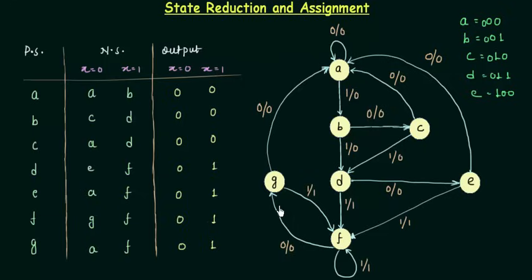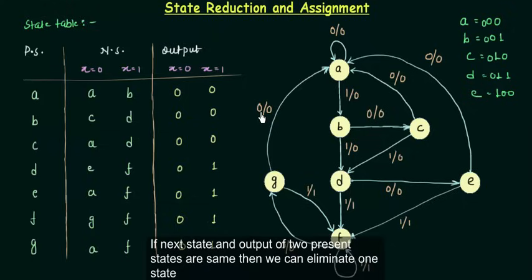To do state reduction, I just need a state table. I will reduce or eliminate a state if its next state and output are the same as another state. This is the important point to remember: if the output column and the next state column, depending upon the inputs, are the same, then I can reduce that state.